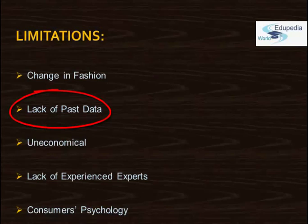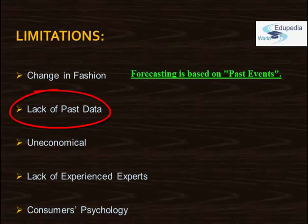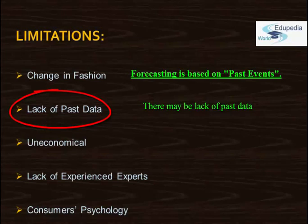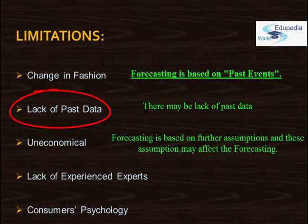The next limitation is the lack of past data. Forecasting is generally based on past events which requires past data, which may or may not be correctly available at all times. This is a typical problem in the case of new products. Additionally, history may not repeat itself at all times. Forecasting is based on certain assumptions, and if these assumptions are wrong, the forecasting will go wrong.